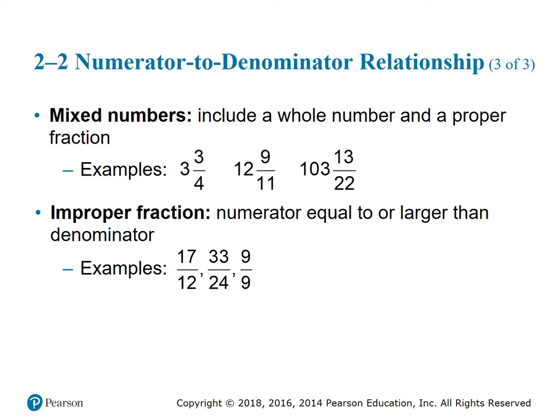Improper fractions are equal to one or larger — that means it is the whole plus some extra. One pizza plus some extra pieces. Maybe we have eight pieces of pizza and then two more, so 10 over eight. We have more than one whole pizza if we had 10 eighths.